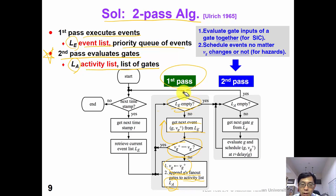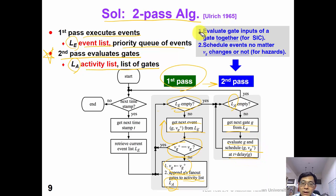After we execute all the events in the first path, we now enter the second path to evaluate the gates in our activity list. Every time we pop out one gate from the activity list, we evaluate gate G and schedule a new event in the future. Please note that in the second phase, we evaluate gate inputs of a gate together so that we can handle the simultaneous input change problem. Also, we schedule an event no matter whether VG changes or not. In this way, we can handle hazards.